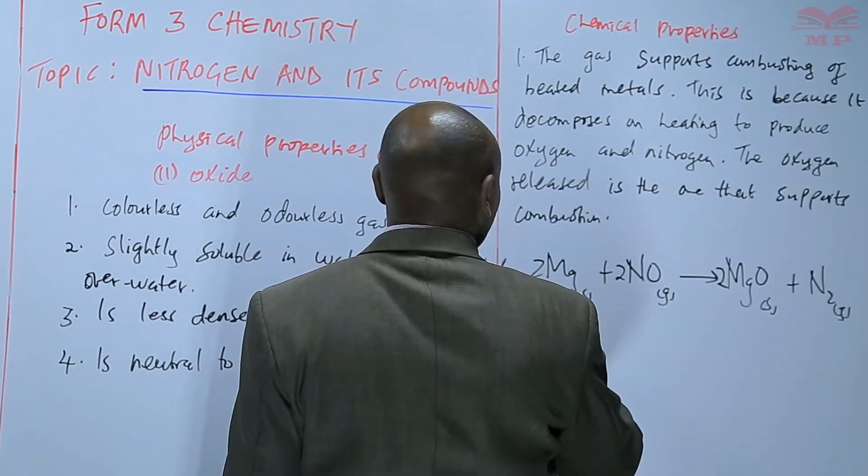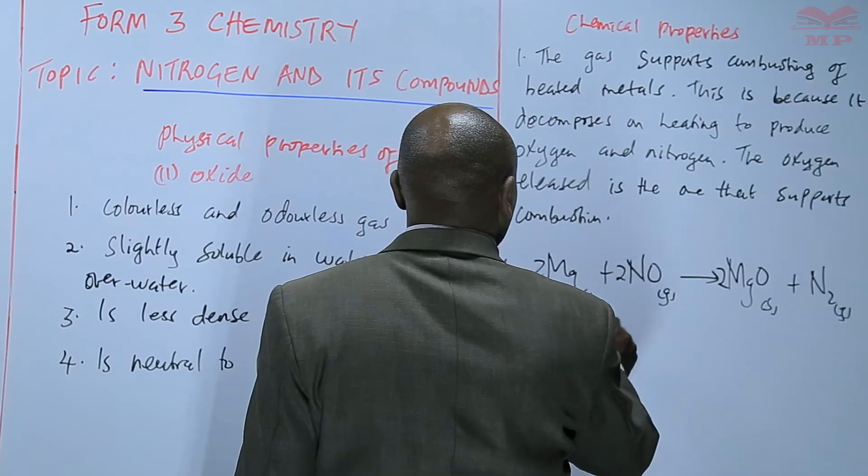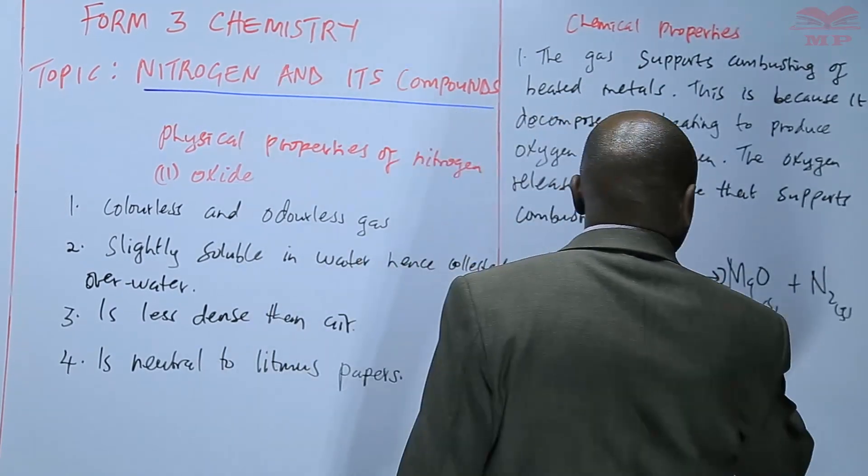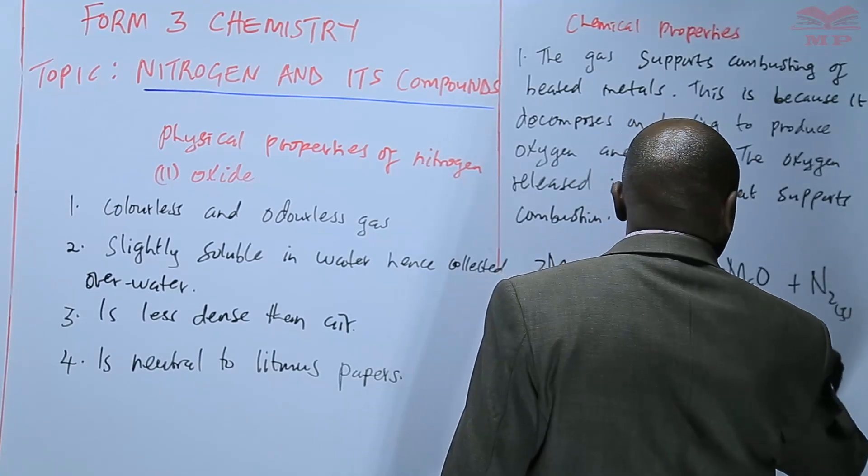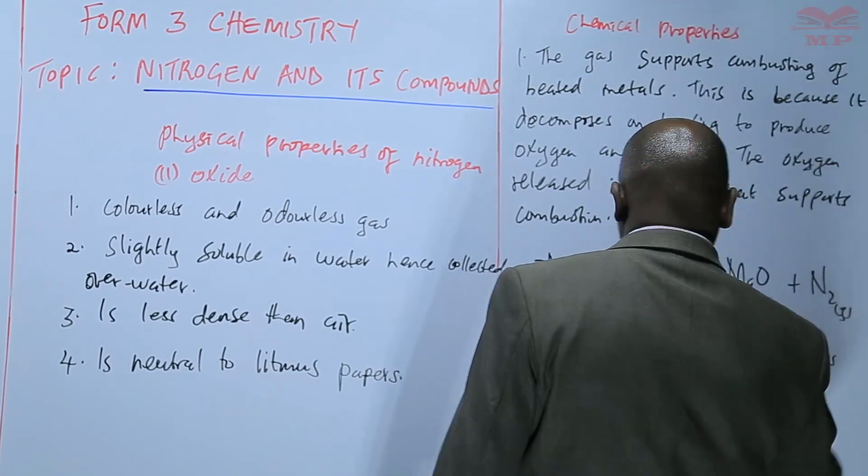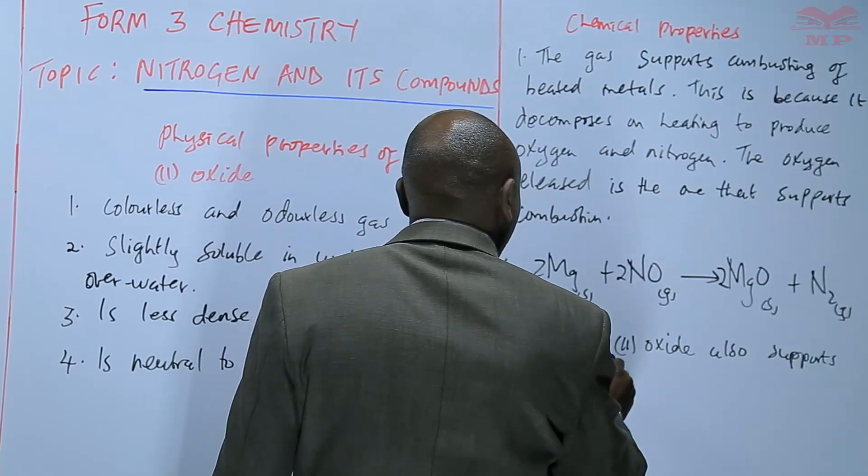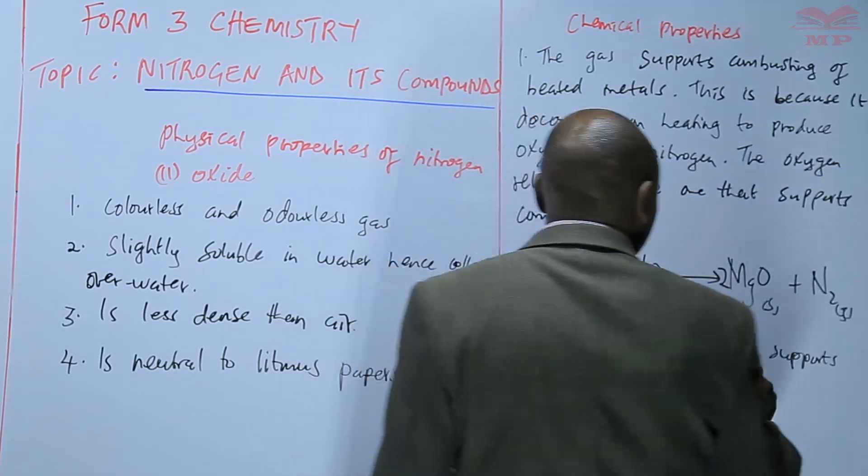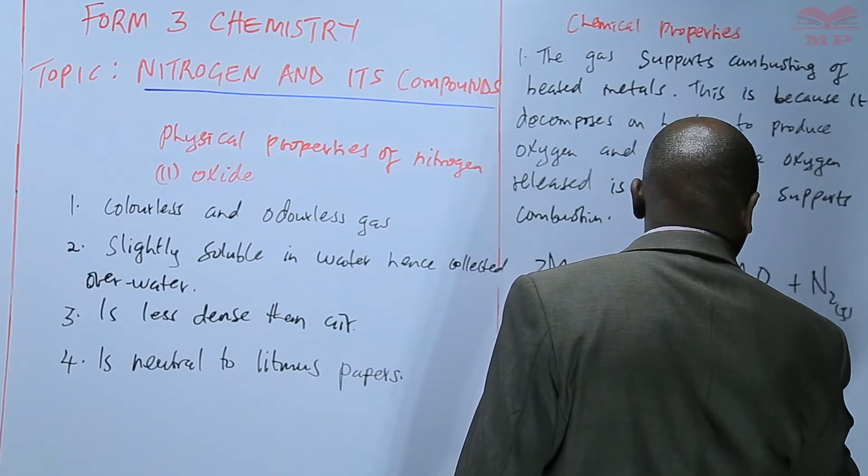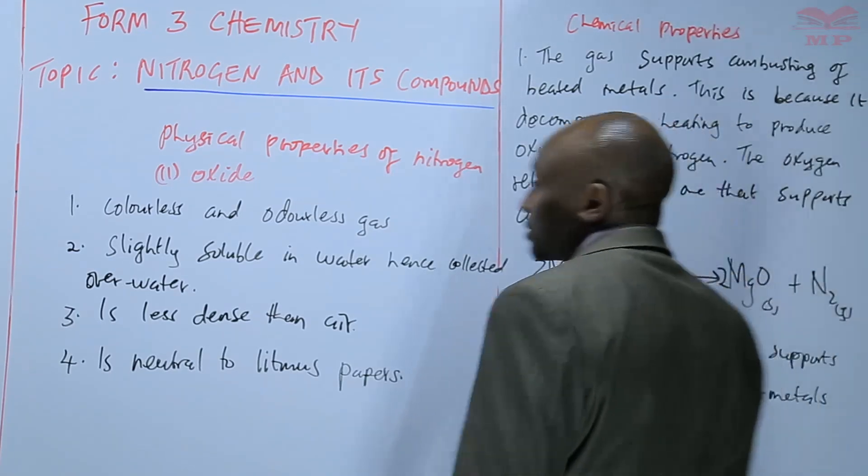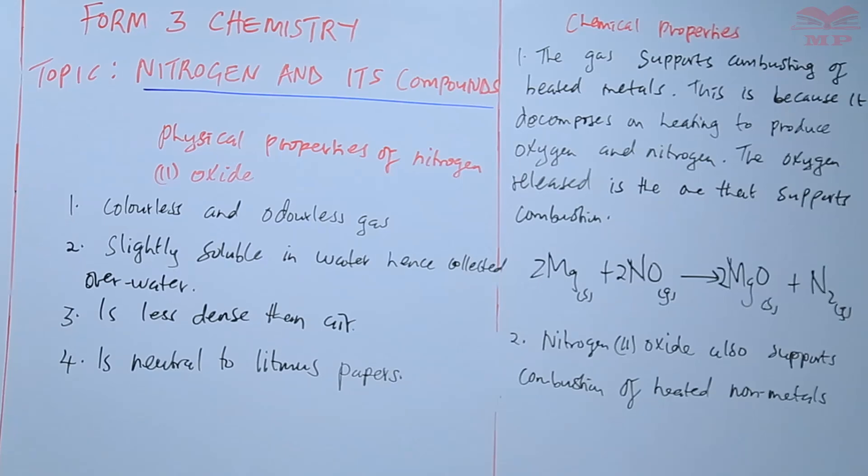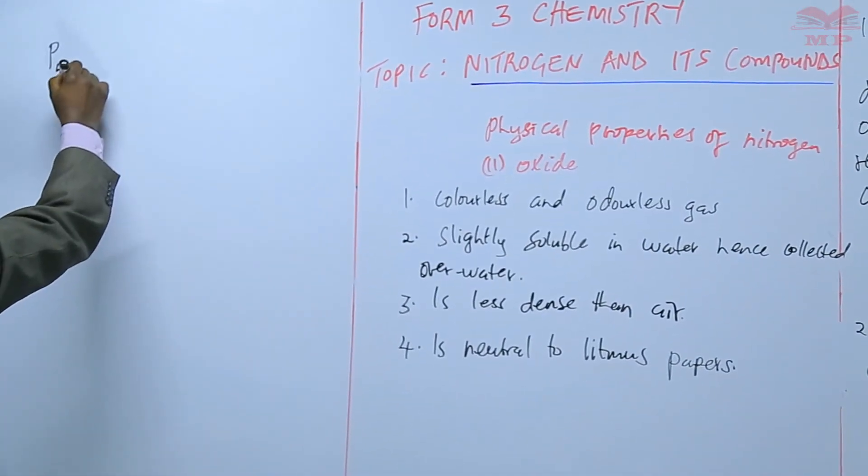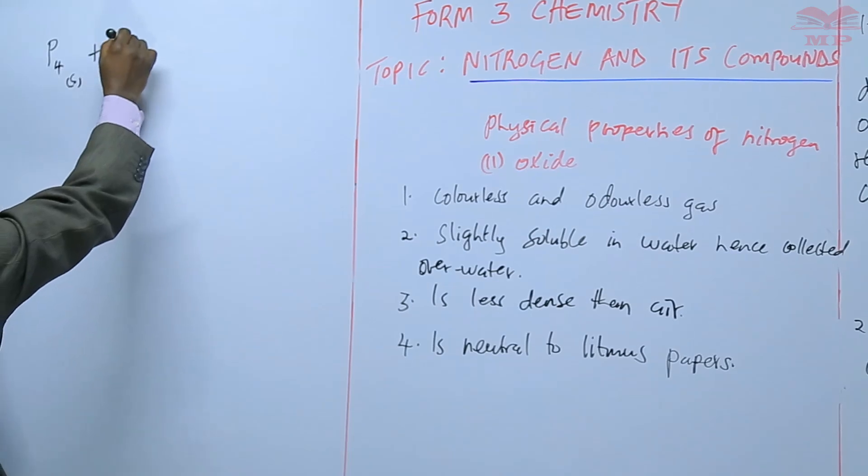We can also say that nitrogen 2 oxide supports combustion of heated non-metals, for instance phosphorus. Phosphorus plus nitrogen 2 oxide: the phosphorus is oxidized to phosphorus 5 oxide and nitrogen gas.